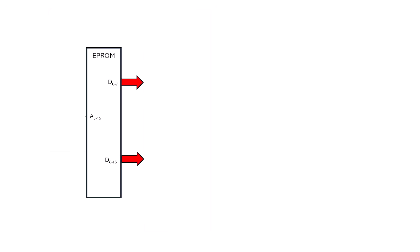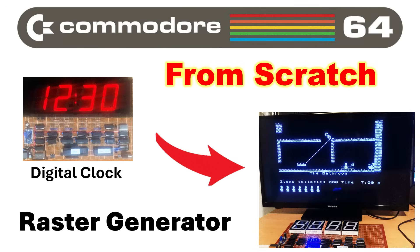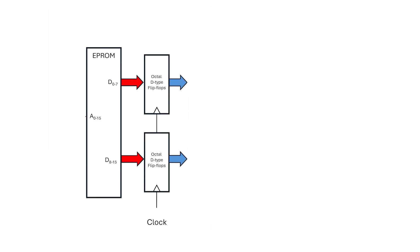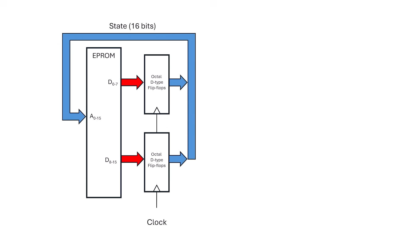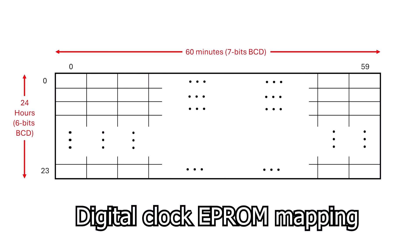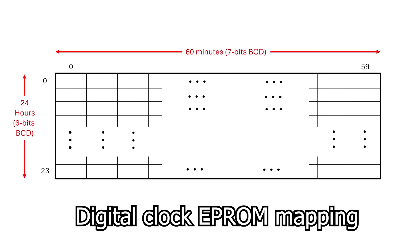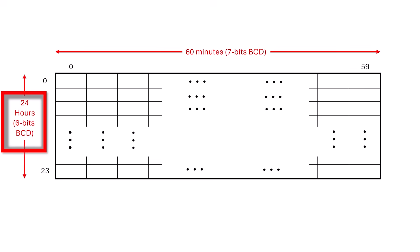We've built EEPROM-based raster generators on this channel a few times. If you really want a deep dive, I recommend you watch the 25-minute Commodore 64 video, but here I'll try and compress it down to 3 or 4 minutes. We start with an EEPROM, and we make it synchronous by latching its output with D-type flip-flops. Next, we loop some of those outputs back to the EEPROM's address lines — that turns the EEPROM into a finite state machine. For the Commodore 64 demo, I mapped each state to a single unique minute in a 24-hour digital clock. I used 7 bits for minutes and 6 bits for hours, so I could output binary coded decimal cleanly for each digit.